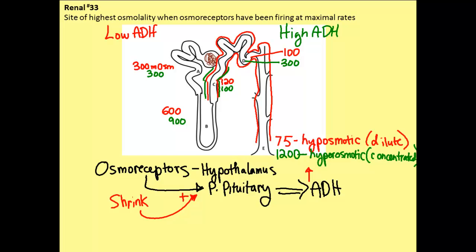Given the stem, it says when osmoreceptors are firing at maximal rates. So, we are looking for a situation where we have high ADH. So, we want to be looking at the values that are in green. And the stem asks us where would be the site of highest osmolality. So, if we look at our green numbers, there should be one that pops out. The site of highest osmolality would be here at point E, because we saw that that went up to 1200 milliosmols. So, the correct answer to this question would be E.